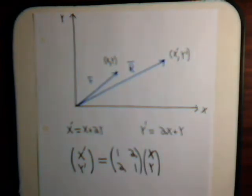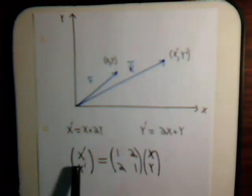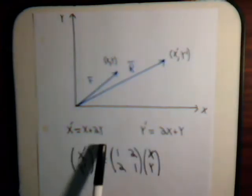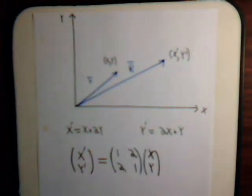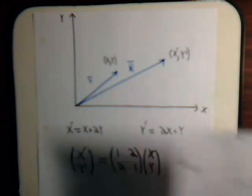However, we can interpret this matrix equation in a different way. We look at it and say: x prime equals x plus 2y, y prime equals 2x plus y. This would be the equation of one line and this would be the equation of a second line. So equivalently, these two equations could be interpreted differently.